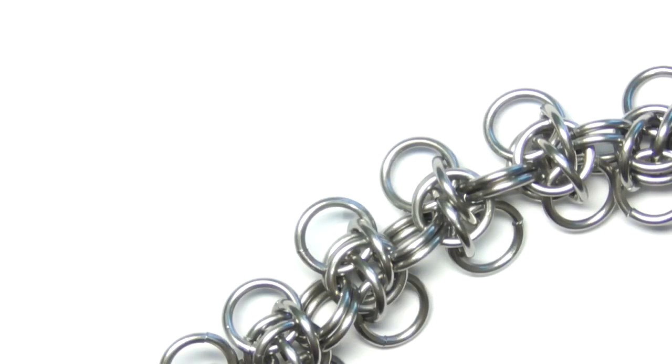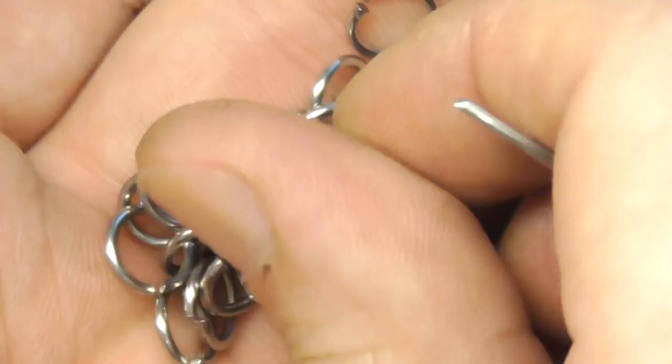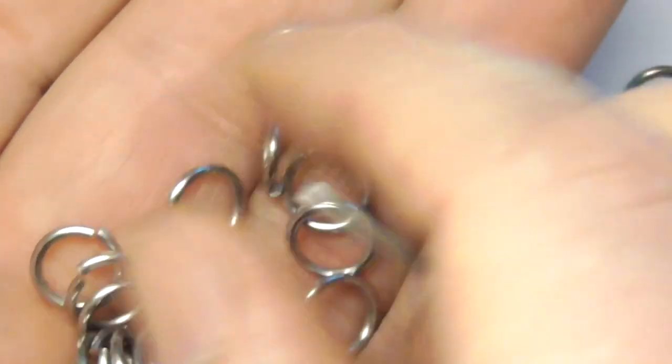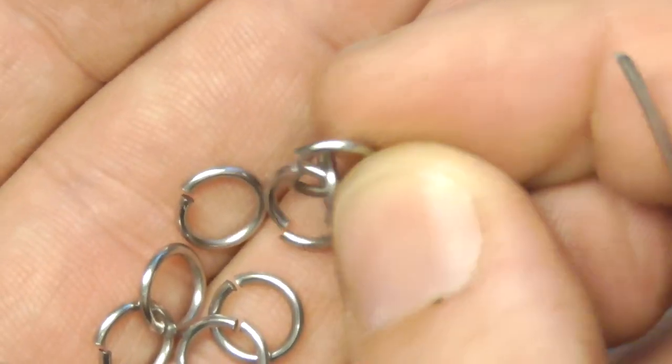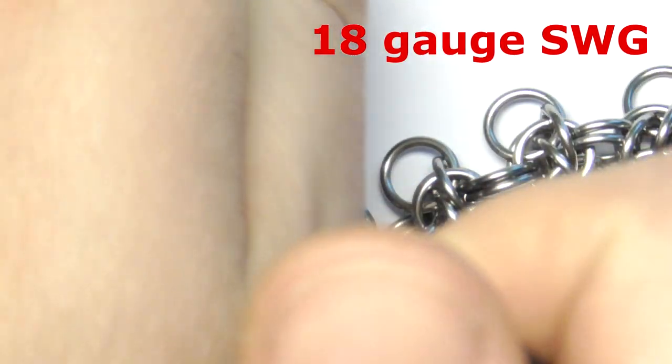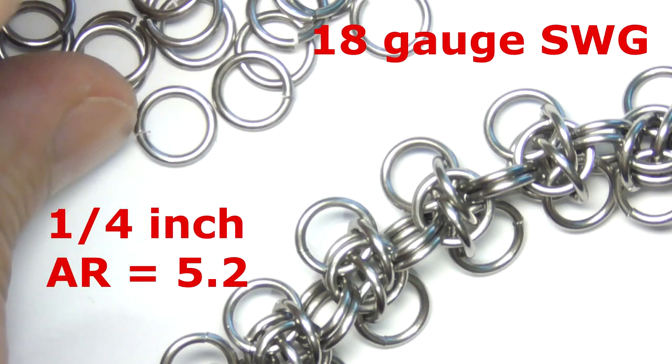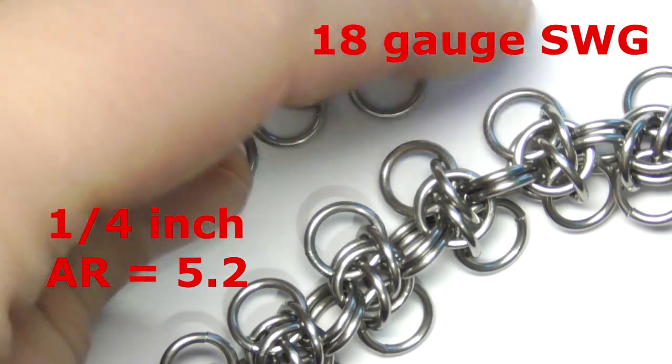To make this weave we will need some rings. I will use rings made of stainless steel. The wire diameter is 1.2 millimeters and the inner diameter of the rings is 6.3 millimeters. The mandrel was 6 millimeters.